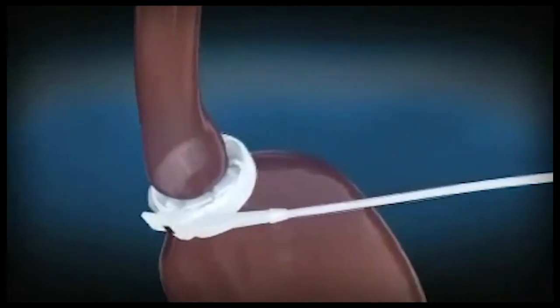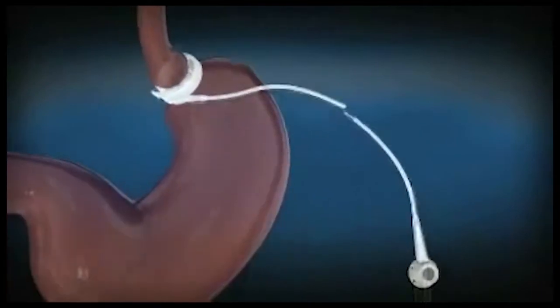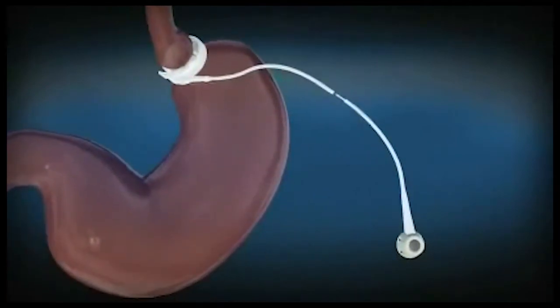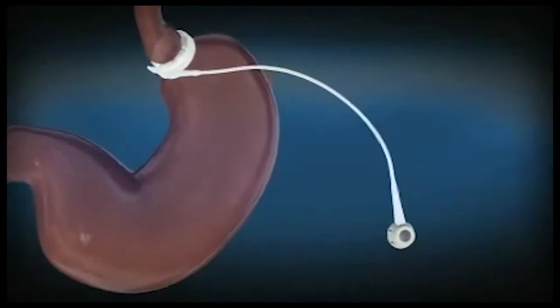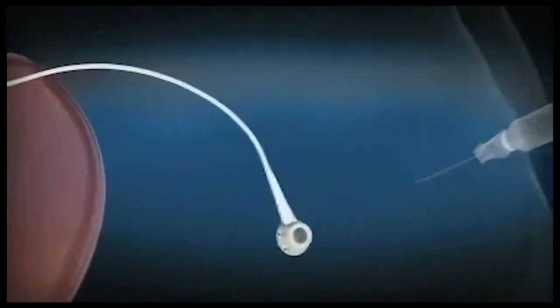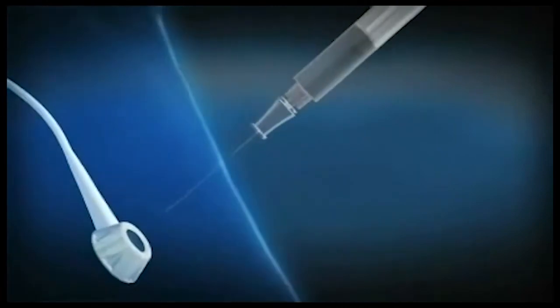The LapBand system is connected by a tube to an access port fixed to the muscle wall just below the skin of your abdomen. Using a fine needle, saline solution can be added or removed from the band to find the right level of restriction.